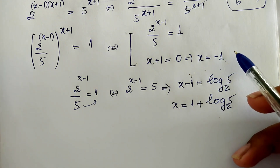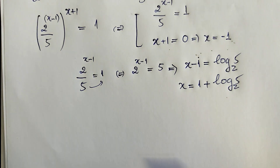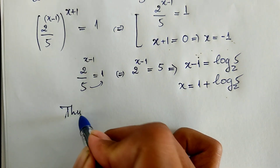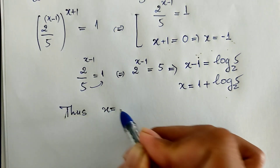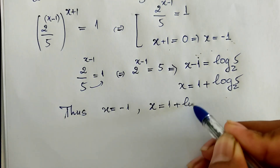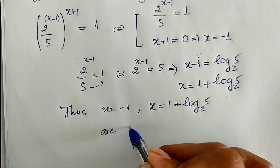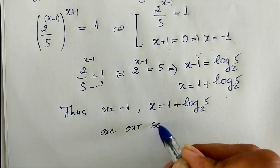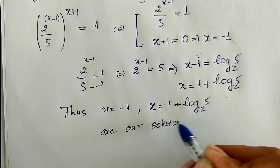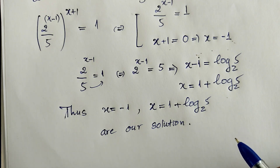So our two solutions are: x equals negative 1 and x equals 1 plus log base 2 of 5. These are the solutions to our equation. Thank you for watching. If you like my video, please don't forget to subscribe to my channel for more exciting videos. Goodbye.